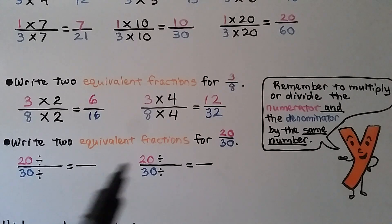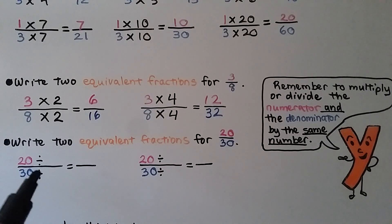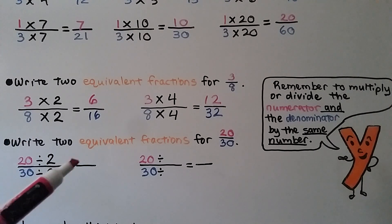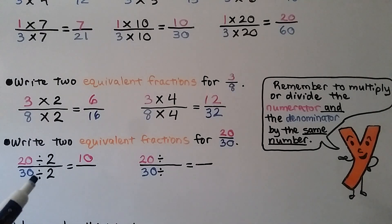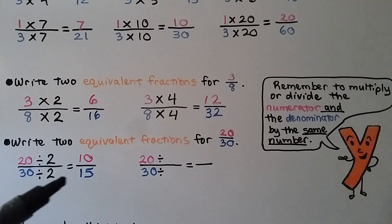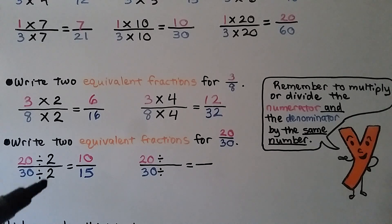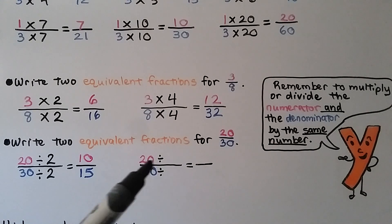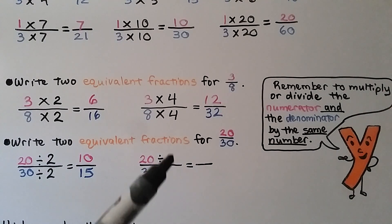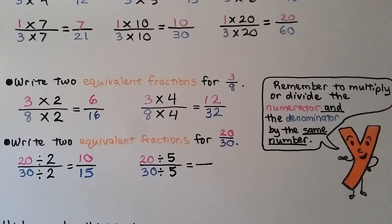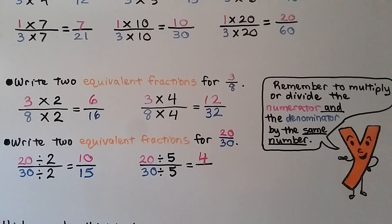It says to write two equivalent fractions for twenty-thirtieths, and now there's a division sign. We can divide them both by two. Twenty divided by two is ten, and thirty divided by two is fifteen. Twenty-thirtieths is equivalent to ten-fifteenths. We divided both the numerator and denominator by the same number. We could do five for both: twenty divided by five is four, and thirty divided by five is six. Twenty-thirtieths is equivalent to four-sixths.